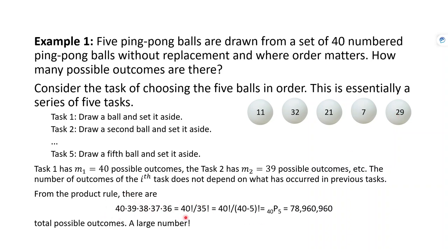We can write this using factorial notation. 40 factorial means 1 × 2 × 3 up to 40; 35 factorial is 1 × 2 × 3 up to 35 — so everything cancels except our five numbers. The general formula is N!/(N−M)!, called permutations. For our example that's P(40,5) = 40!/35!, which equals 78,960,960. These numbers get large fast, so be cautious — Excel may not even compute 40 factorial directly.